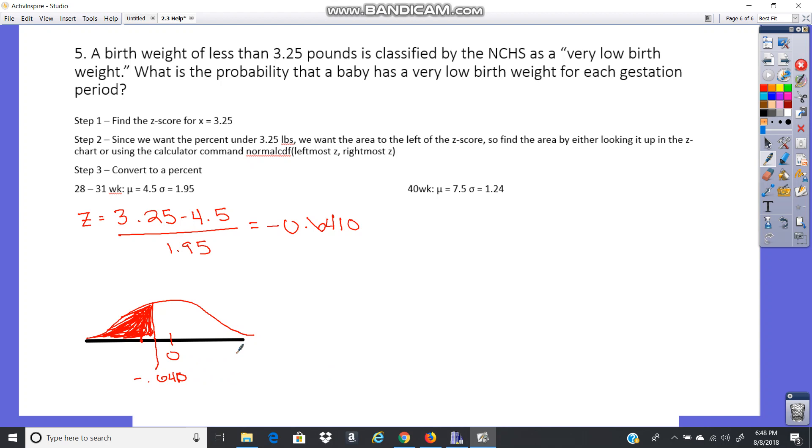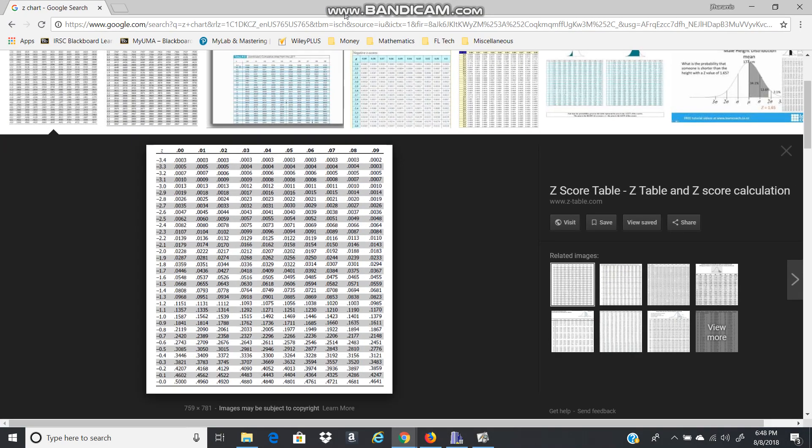Okay, so we can look this up in our z-chart. So we would need the negative value z-chart. So it was negative 0.6, so 0.64. We would go over, over, over there. So 0.2611.